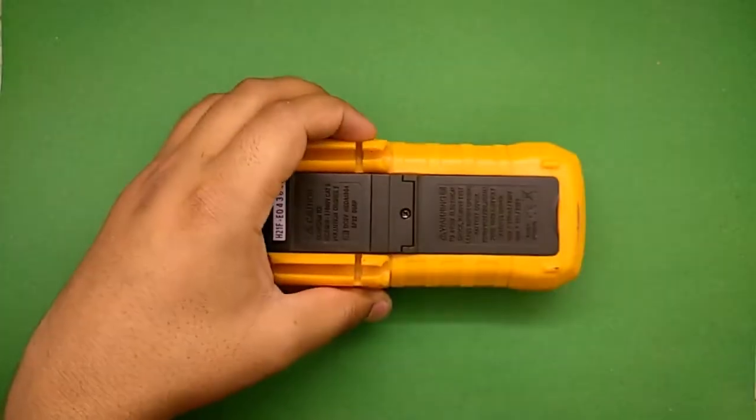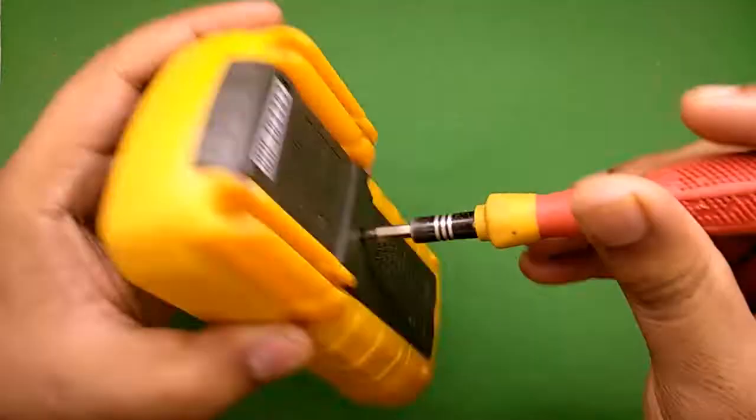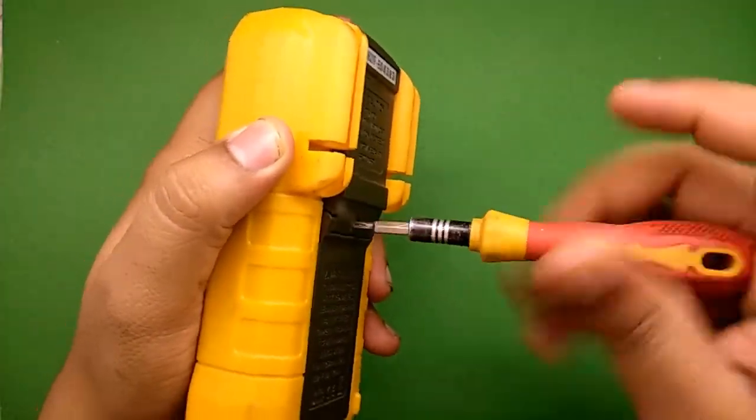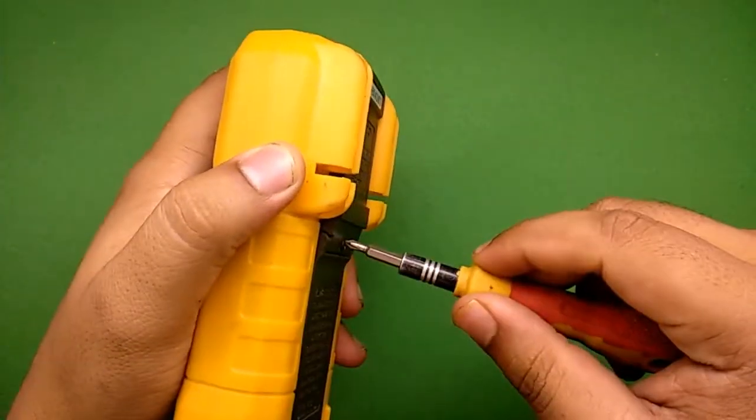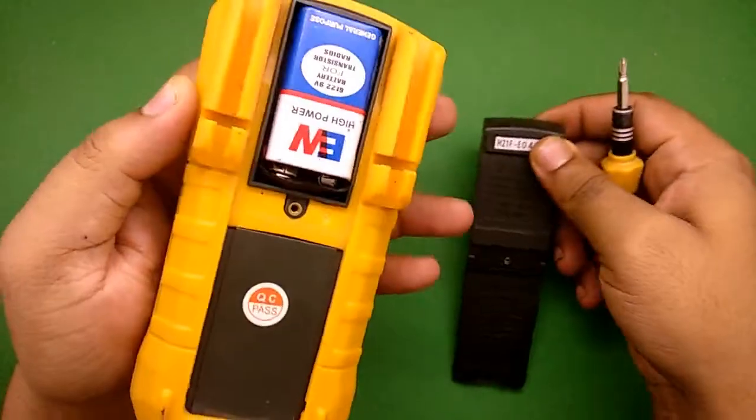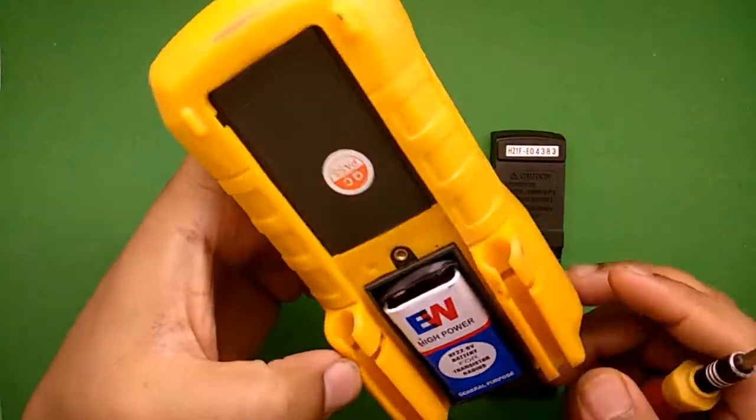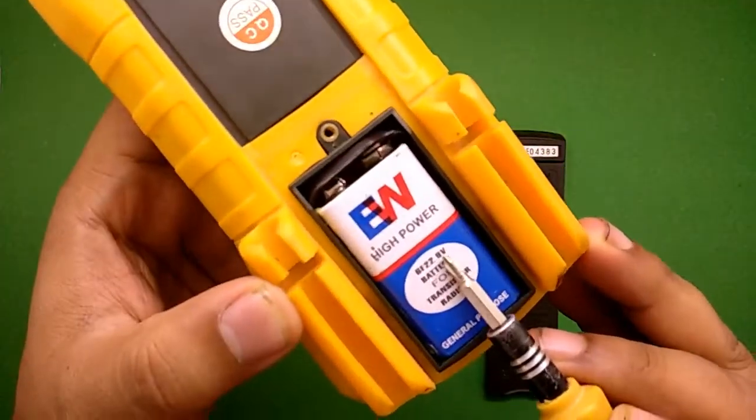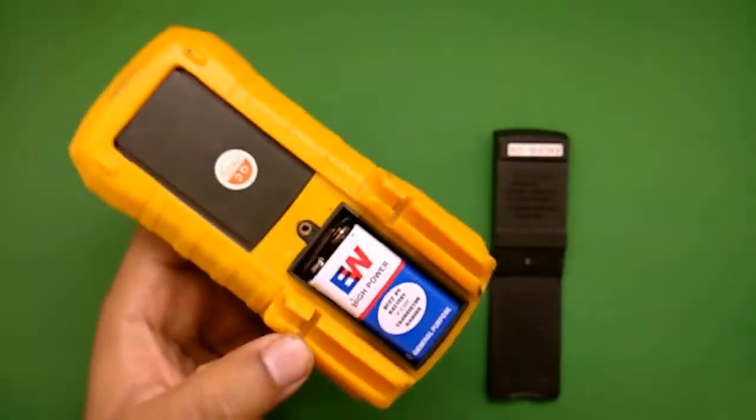So first of all I'm gonna open this multimeter. Let's unscrew it and see what's inside. And here we found a 9 volt battery. It's an unrechargeable one.